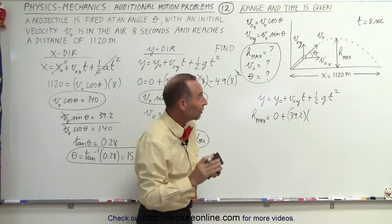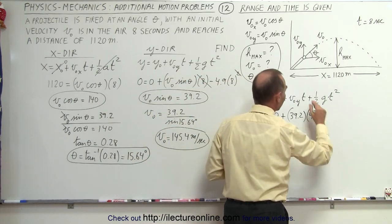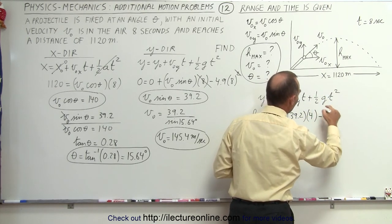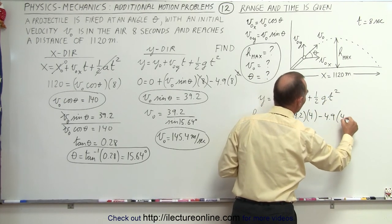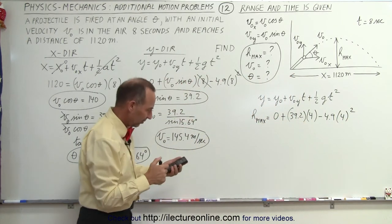39.2 times the time in the air. Now, the time in the air when it reaches maximum height will be 4 seconds, half the time for the total trajectory. Minus 4.9, one-half times g, times 4 squared. Now, we go ahead and plug that in and see what we get.